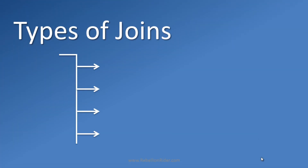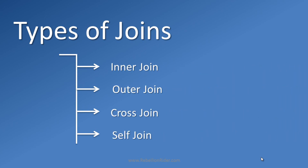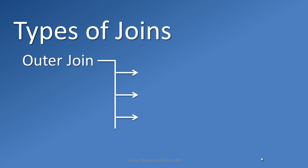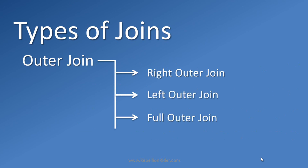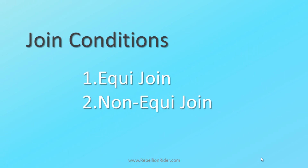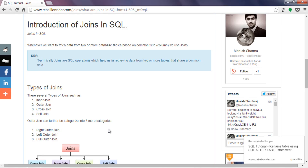Basically there are 4 types of joins in SQL: inner join, outer join, cross join, and self join — where outer join can further be divided into 3 more categories: right outer join, left outer join, and full outer join. Apart from types of joins, we have 2 join conditions: equi joins and non-equi joins. To read about equi and non-equi joins and to have more in-depth knowledge of joins in SQL, visit the web link on my website — you can find this link in the description box below.